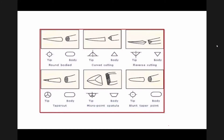The tip of the round body needle is pointed but smooth. In the cutting needle, it is sharp at the upper edge. There is also a reverse cutting needle in which the cutting edge faces the back of the needle. The most commonly used types are round body, taper cut, and cutting needles.